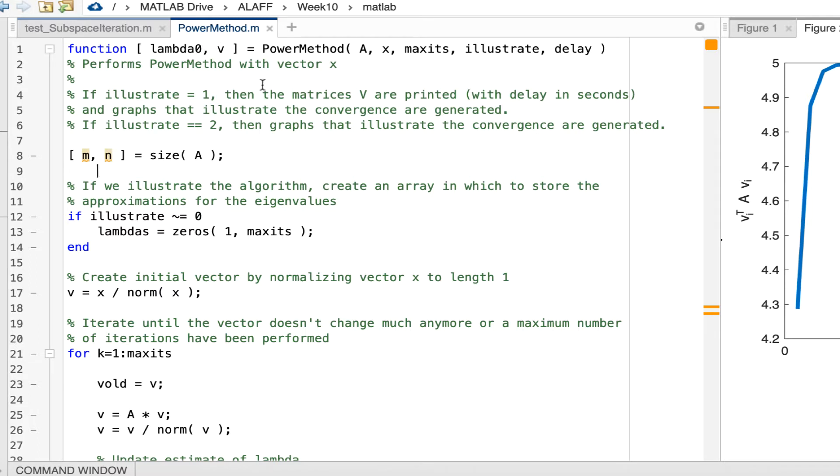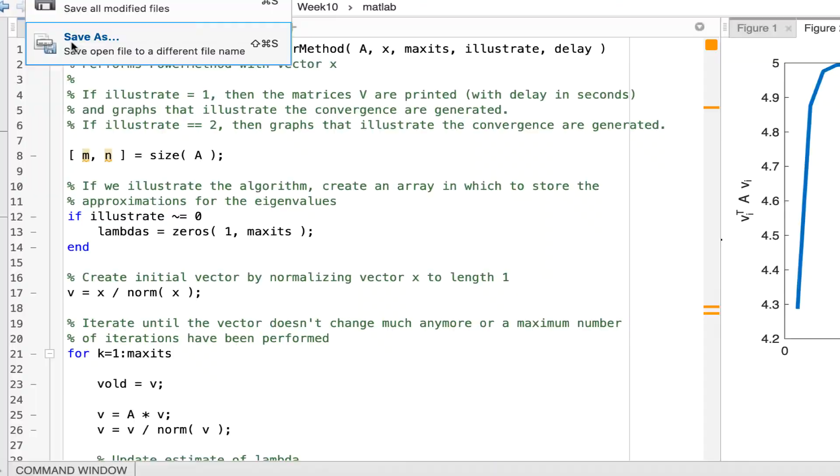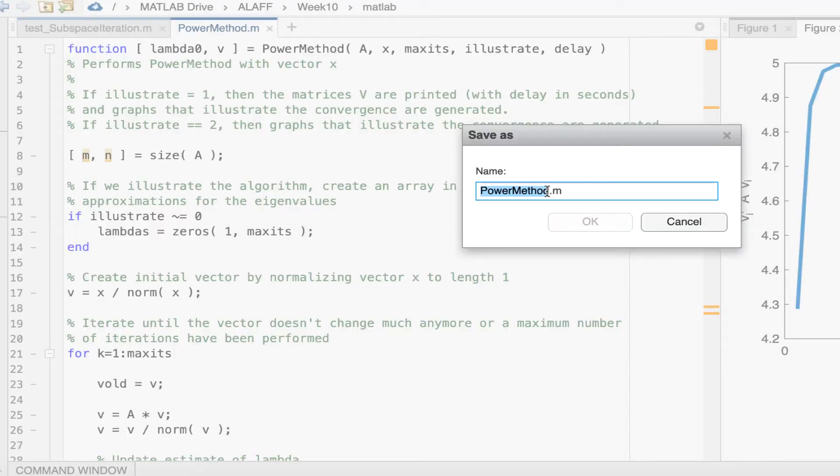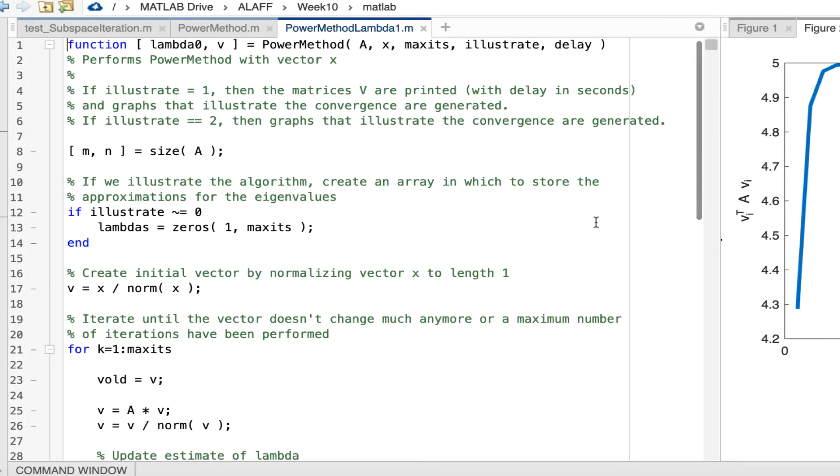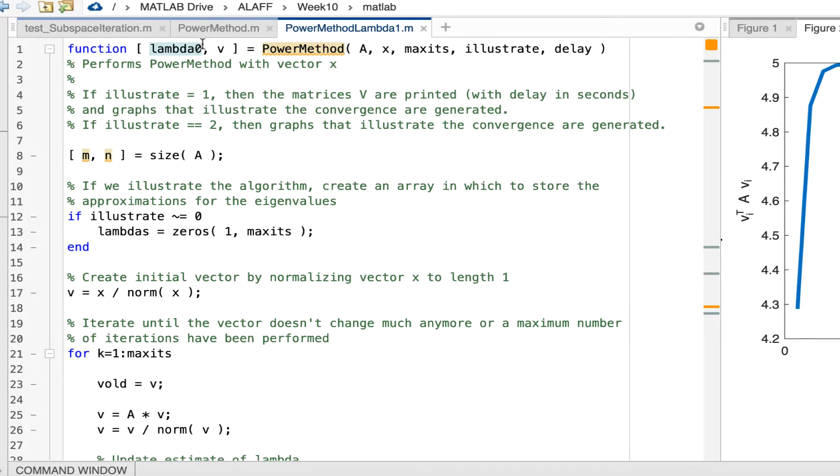So here we have our power method. Let's save this as power method lambda 1. What do we want to do? Well, every occurrence of lambda 0, we should really call lambda 1. So let me go ahead and make all of those changes.